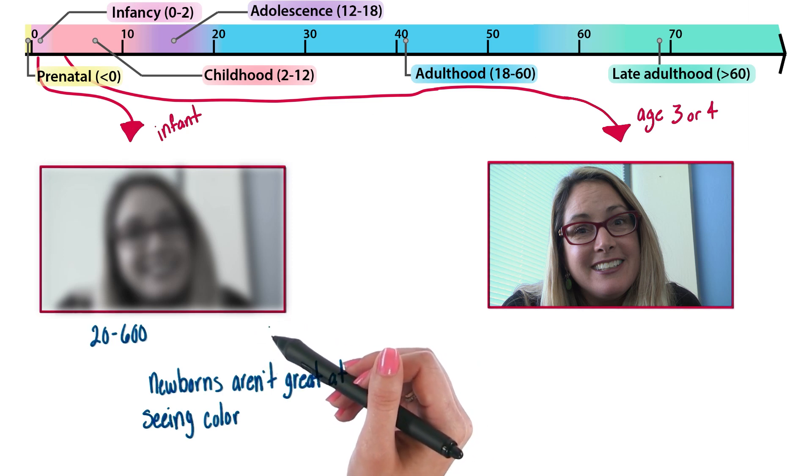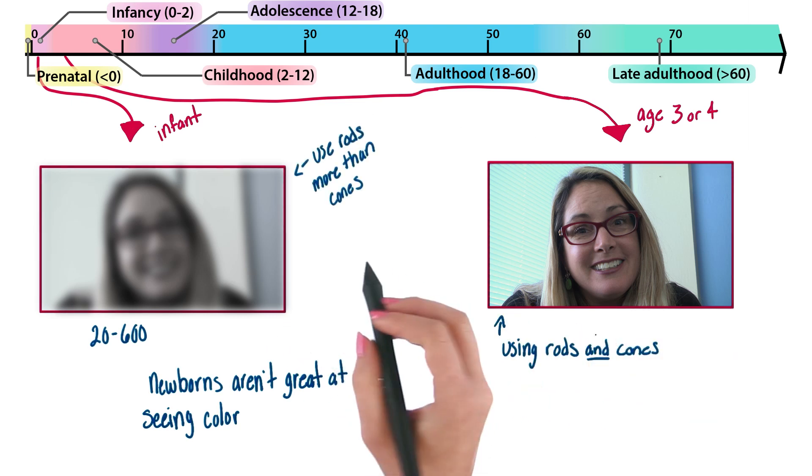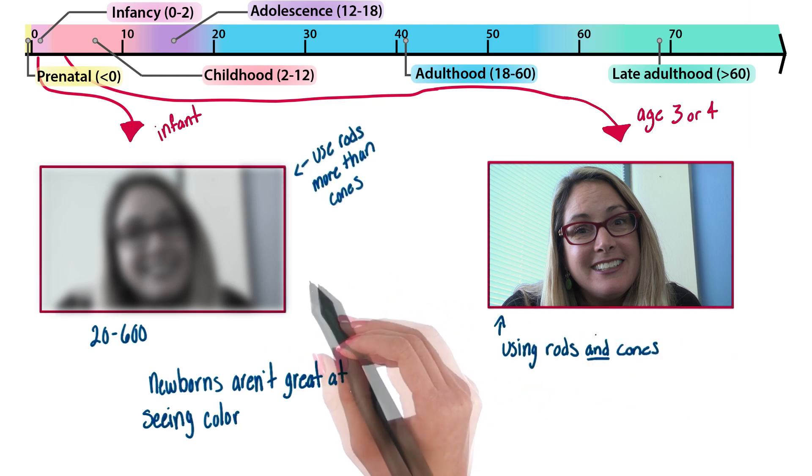Remember the rods and the cones in the eye? Our cones need to develop and merge to the center of the retina for us to see color in detail. When we're born, we primarily use our rods, which allow us to see black and white or light and dark.